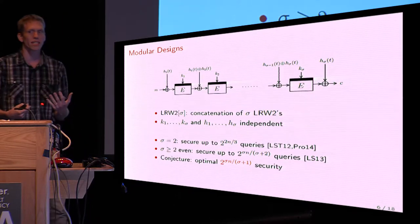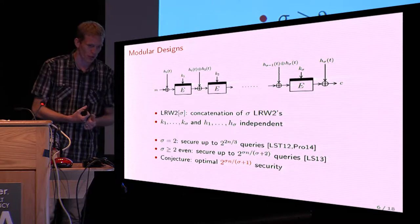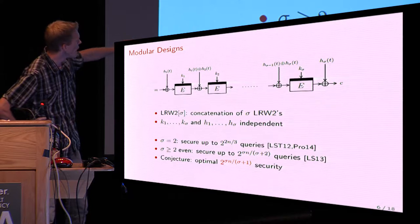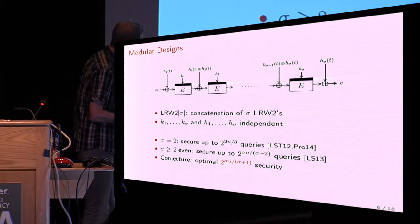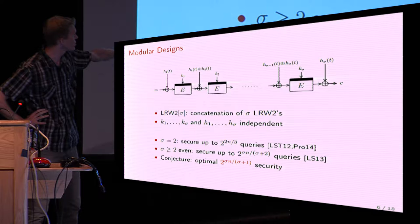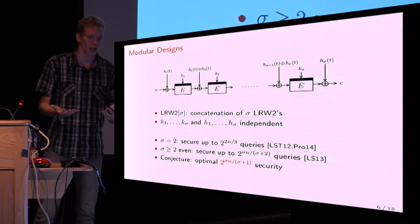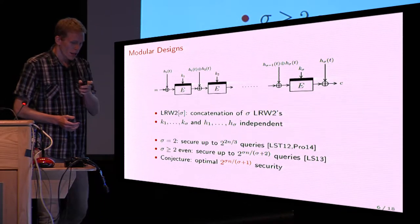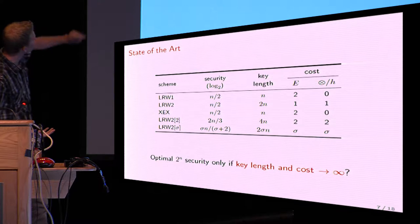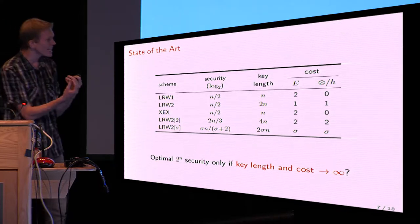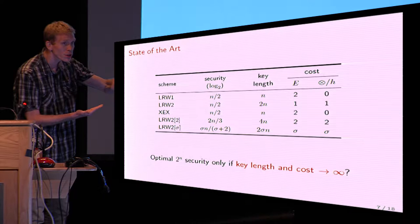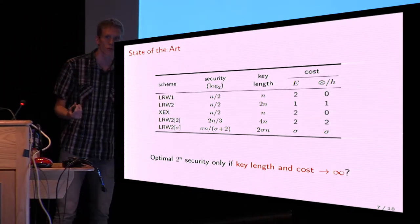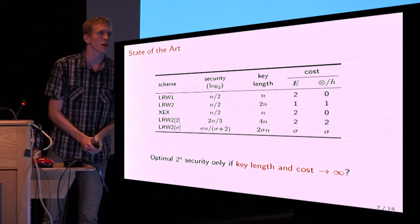LLW2 went further and looked at the general cascade of an even number of rounds, proving you get 2^(sigma·n / (sigma+2)) security, while acknowledging it's probably not tight. The conjecture is that you can generally get 2^(sigma·n / (sigma+1)) security. So an efficient scheme achieves only birthday bound security; you can improve beyond that, and can even reach optimal security, but only asymptotically — as the number of block cipher evaluations and universal hash function calls goes to infinity. The question is: can we do better?